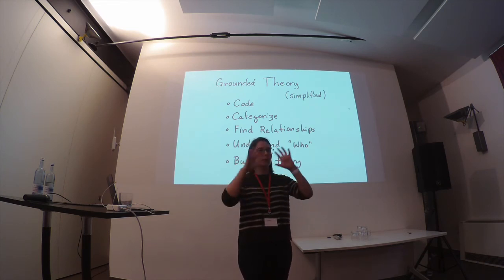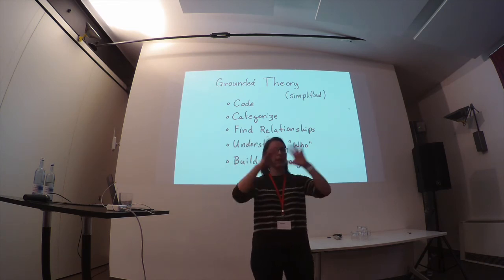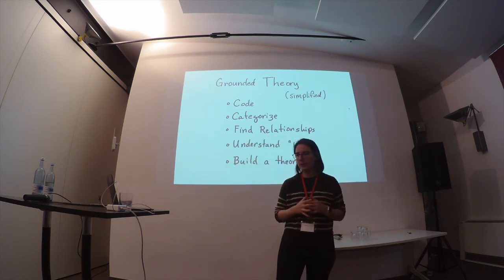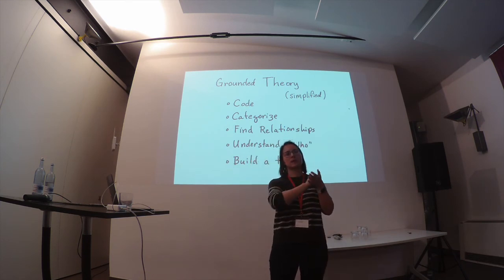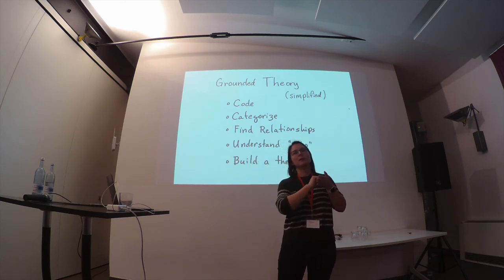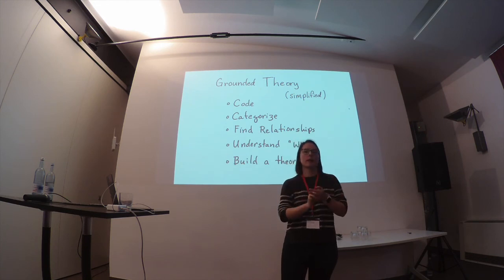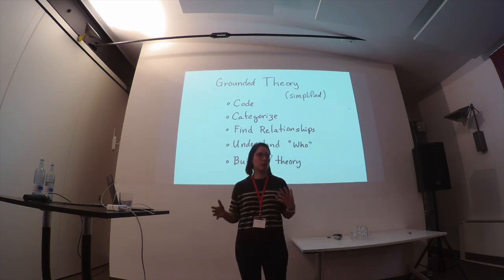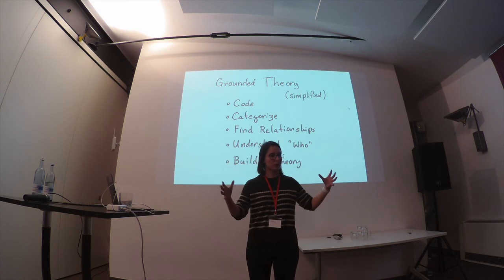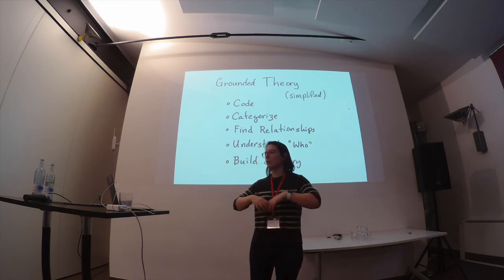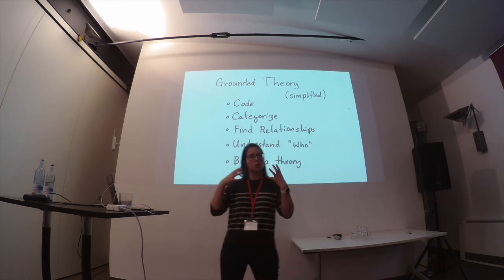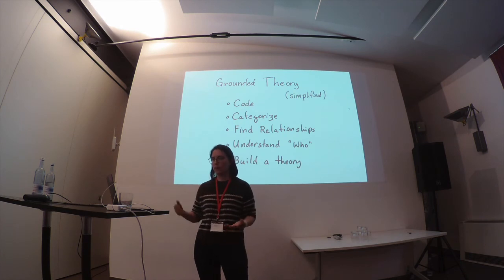This brings us to qualitative methods. There are systems for understanding this information, and I'm going to introduce you to two. The first is called grounded theory — you develop a theory about a body of knowledge that closely models it. It doesn't have to model everything, but it should give you an idea of what's going on. You have a series of steps: first you go through your text body or database and you code everything, meaning you come up with one-word descriptions of what each thing is saying. Then you categorize — you consolidate, find relationships between categories, try to understand who is doing what, and you build a theory.